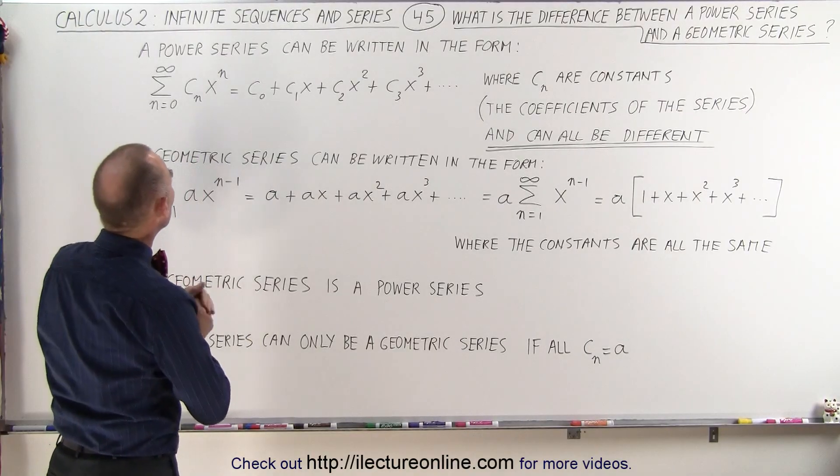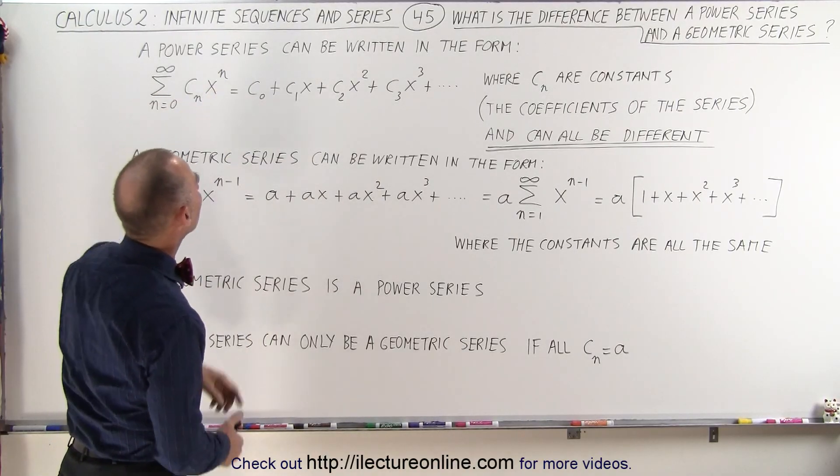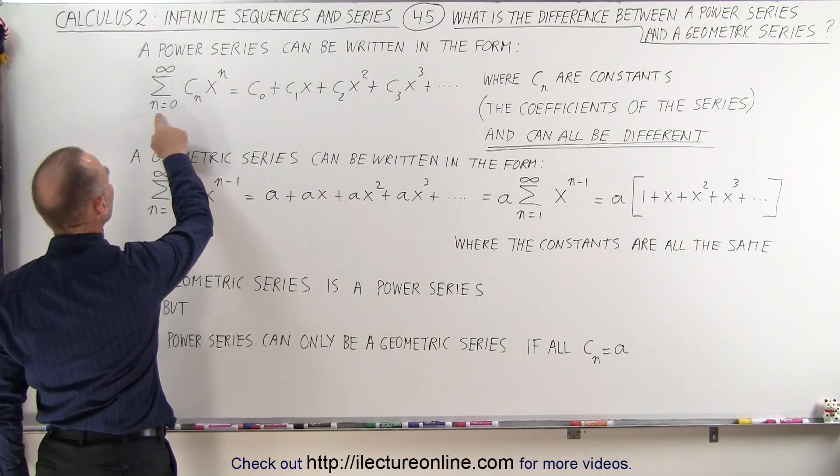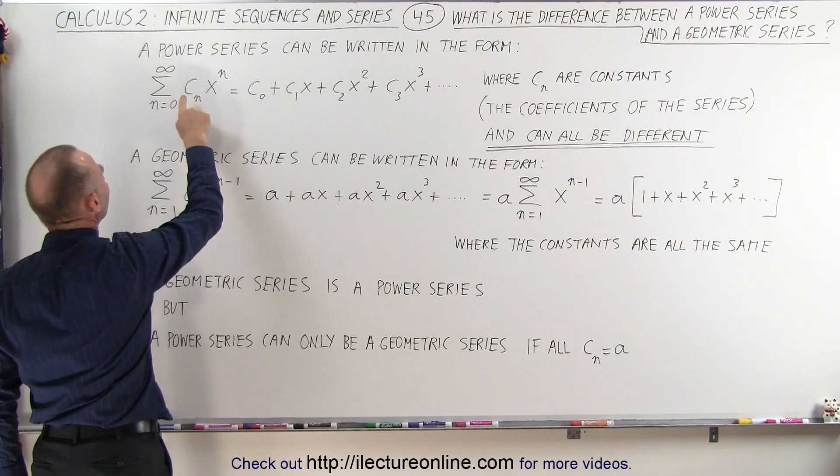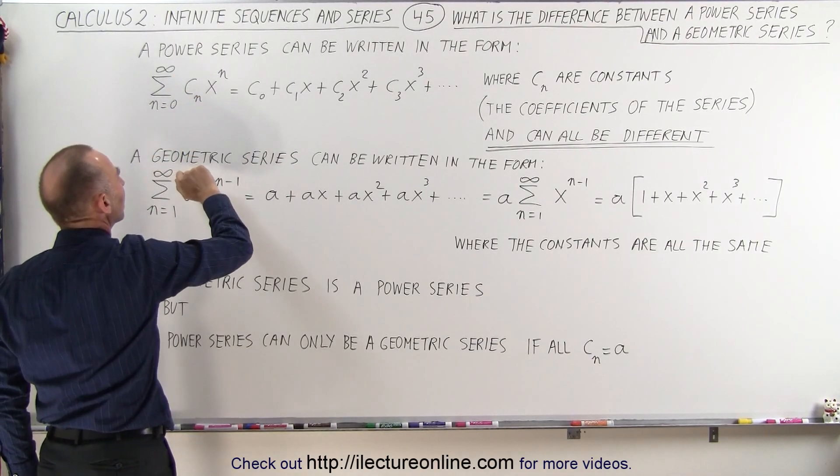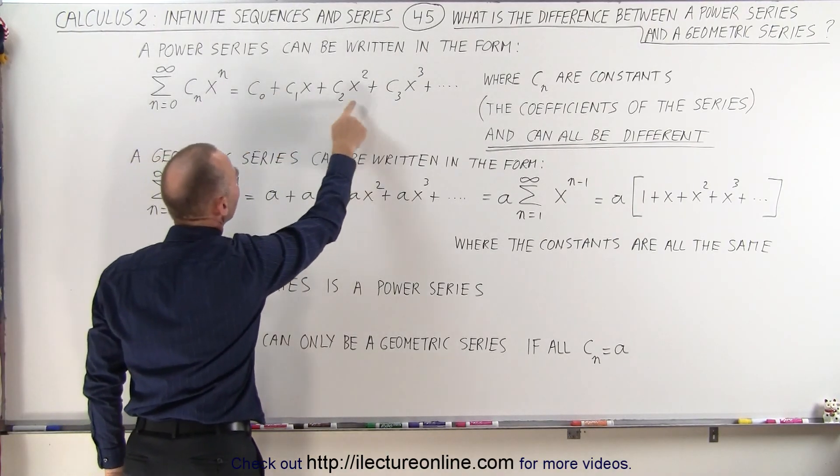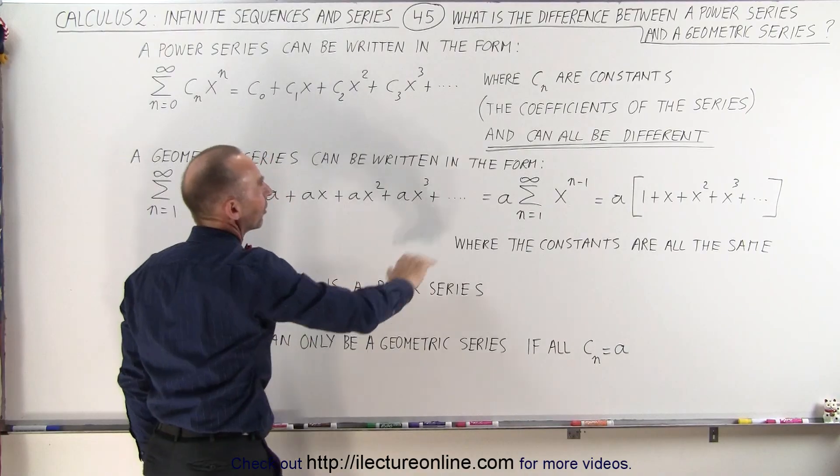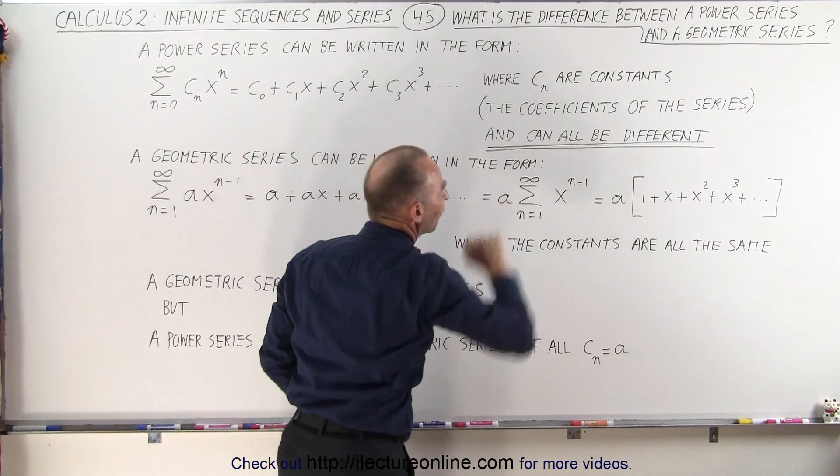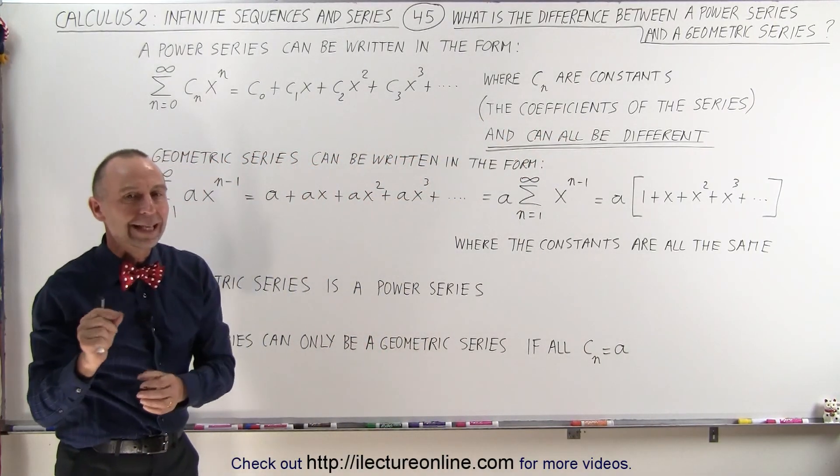As we saw in the previous video, a power series can be written in the form: the infinite sum from n equals 0 to infinity of c sub n times x to the n power. Notice that c sub n means that every constant of every term can actually be different. There are constants, they're called the coefficients of the series, but they can all be different.